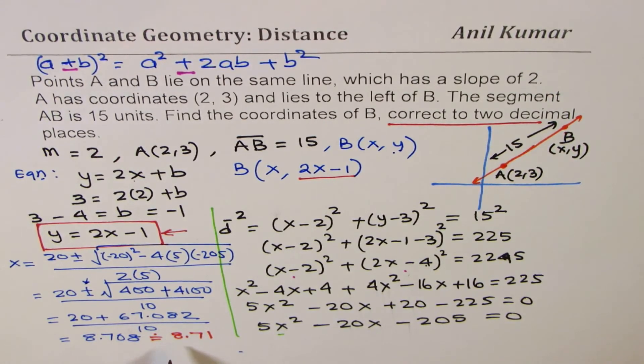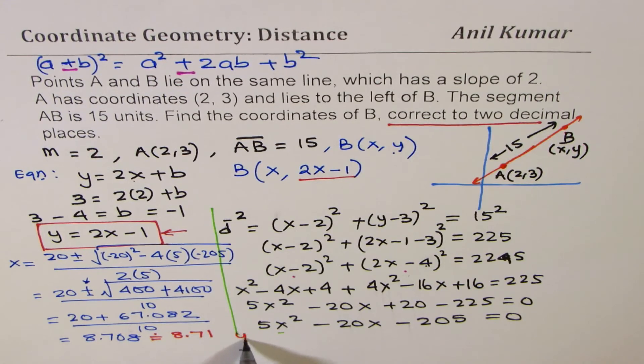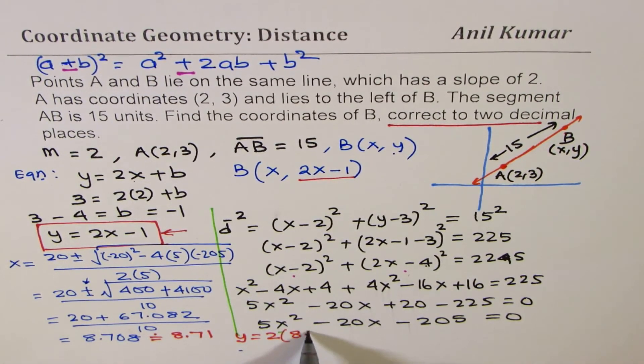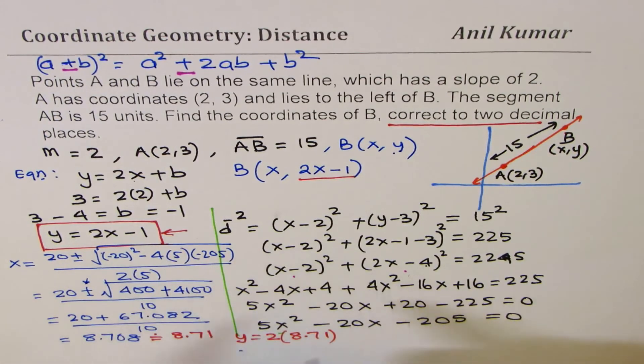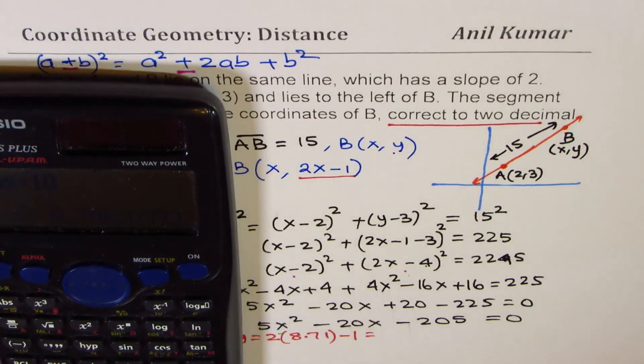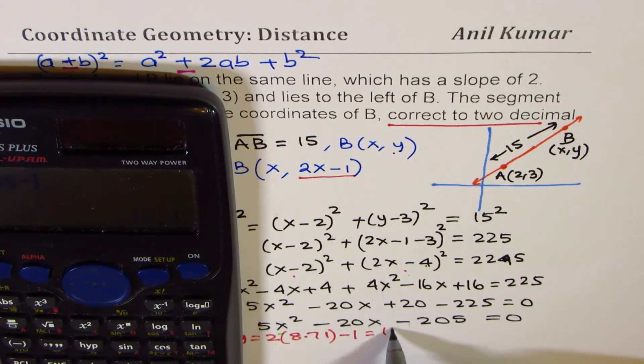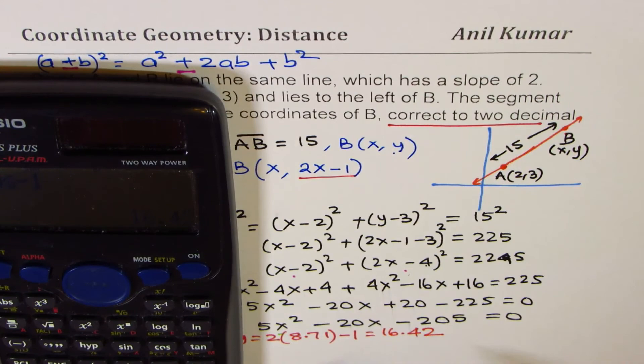Once you get x value, you can calculate y value as 2 times x value, which is 8.71 minus 1, okay? So, let's do it. So, we'll do 8.71 times 2 and we'll then take away 1 from it to write 16.42. Do you see that?